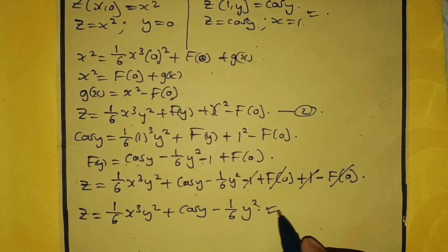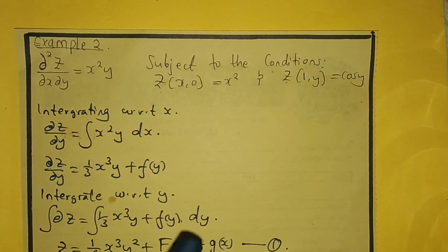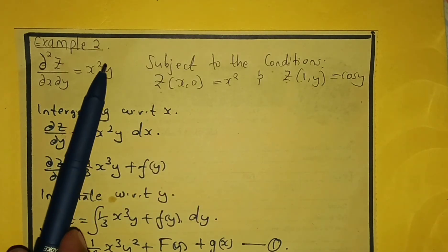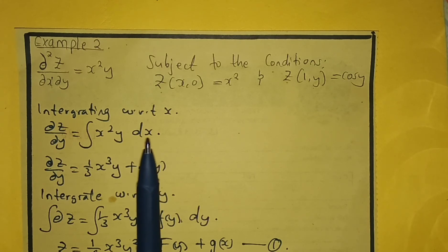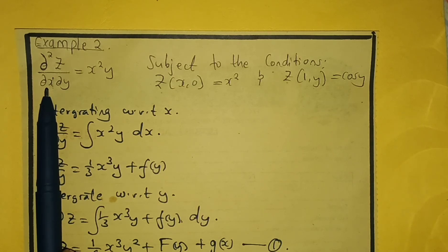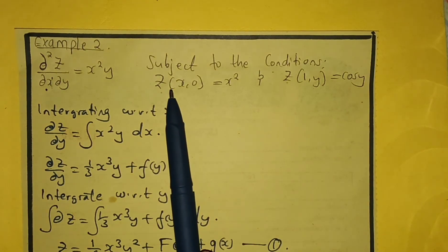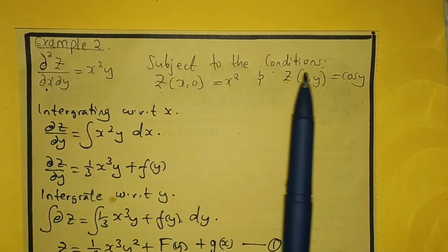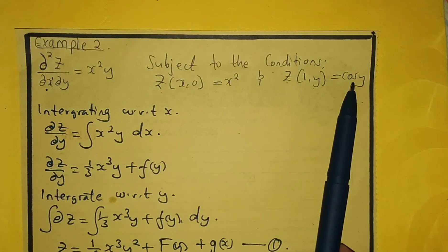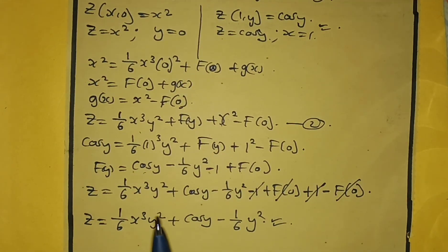This is our solution. We solved the PDE by the direct integration method — integrating with respect to x once, then with respect to y once, then applying the two boundary conditions z(x, 0) = x² and z(1, y) = cos y. The final solution is z = (1/6)x³y² + cos y − (1/6)y².